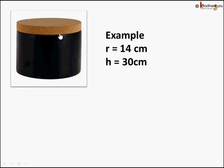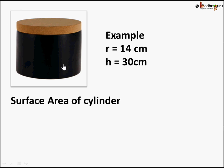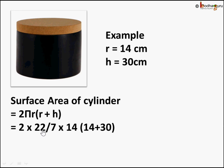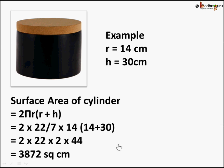Let's take a simple example. Here is a cylinder with radius 14 cm and height 30 cm, and we need to find the surface area. Using the formula 2πR(R + H), we replace R with 14, H with 30, and π with 22/7. So: 2 × (22/7) × 14 × (14 + 30). The 7 and 14 cancel, leaving 2. So 2 × 22 × 2 × 44 = 3872 square cm, since radius and height were in cm.